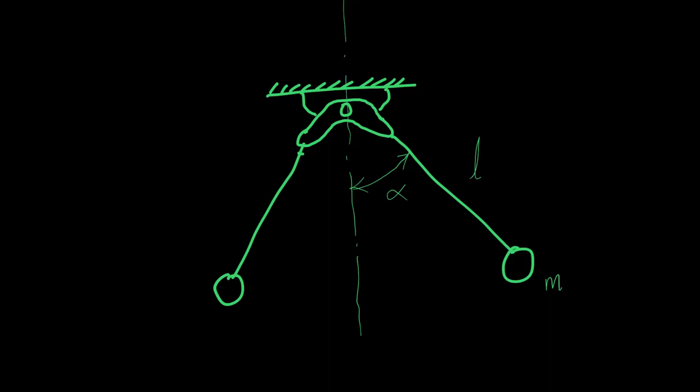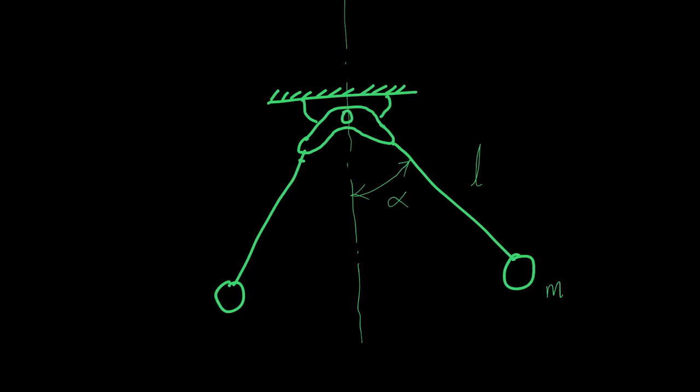So here disturbing the system means you can simply move this leg this side and just leave it. You can just give an initial displacement and then just leave the system as such. Then what will happen? Then this whole system, these two massless rods and these two discrete masses, this whole system will rotate about this particular point, pivot, this particular point which is the pivot point. So we know that this particular system will undergo a motion about this particular point, that will be pure rotation about that point.